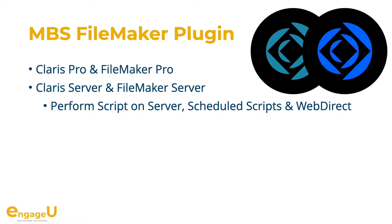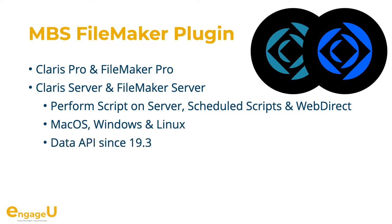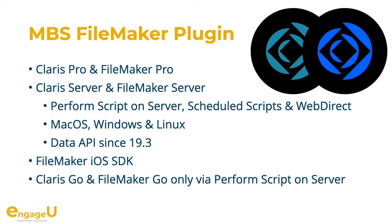For Linux we are proud to have one plugin that runs on CentOS 7, Ubuntu 18 and newer version 20. The Data API is supported since FileMaker 19.3. The FileMaker iOS SDK can be used to build your own iOS app and embed our iOS version of the plugin. Claris Go and FileMaker Go can use the plugin via PerformScript on Server if you install the plugin on the server side. We have a nice example for barcodes which either creates a barcode locally with the plugin or delegates this task via PerformScript on Server.